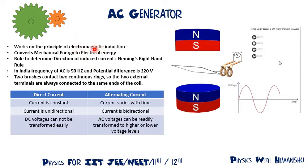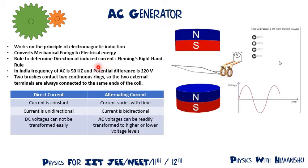Remember that an AC generator works on the principle of electromagnetic induction — it converts mechanical energy to electrical energy, because we have to rotate the coil. When the coil rotates, current flows and a potential difference is produced. So we are providing mechanical energy which is being converted to electrical energy. The direction in which the current flows depends on Fleming's right-hand rule. In India, the frequency of AC is 50 Hz and the potential difference is 220 volts.